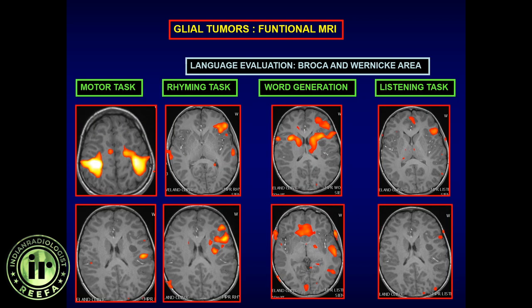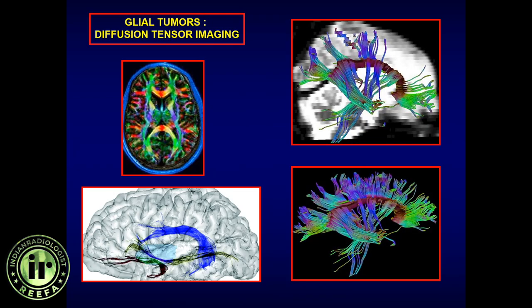In a case of oligodendroglioma with calcification — a low-grade tumor with a narrow zone — functional MRI was performed with motor and language tasks (rhyming, word generation, and listening). The motor task area was distant from the tumor, but language tasks came within less than 5mm, and rhyming task areas overlapped the tumor. This means a full resection margin would cause deficits, so only debulking is performed. This directly impacts the prognosis.